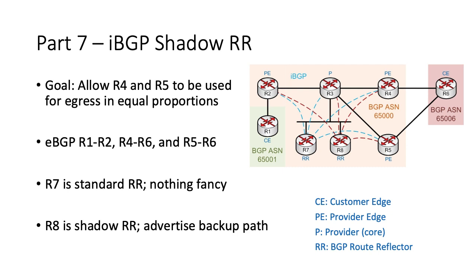This increases availability by protecting against a route reflector device failure. The original route reflector, which is R7, will continue to select a best path based on its view of the topology, then advertise those best paths to other iBGP speakers. The shadow route reflector, which is R8, will run best path normally but advertise the second best path instead.